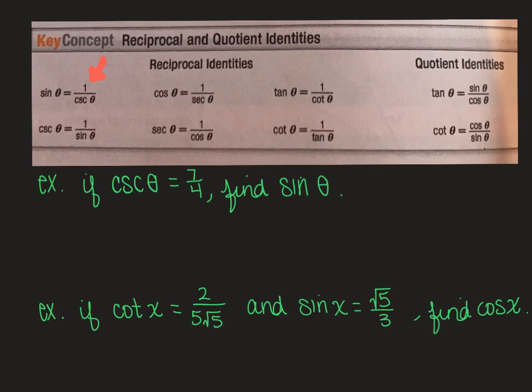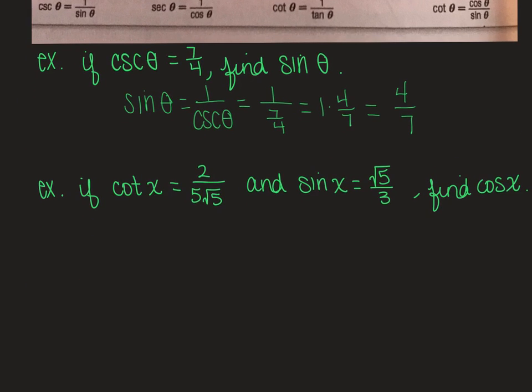So when you get that written out, you have your cosecant of theta equals seven over four, so you can use your trig identity. So sine of theta equals one over the cosecant of theta. Replace that cosecant of theta with seven over four, and you can use keep change flip, so you have one times four over seven. So now we know that the sine of theta is going to be four over seven. That's pretty much it, you can pause it if you need to or we're going to move on to the next example.